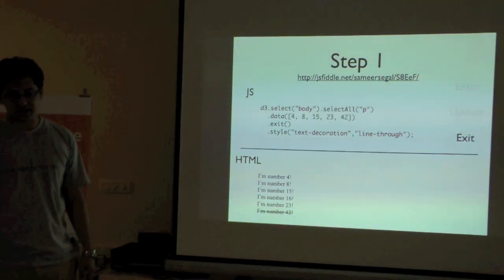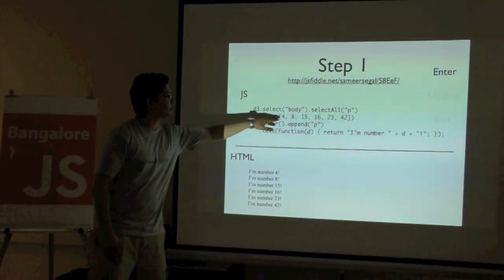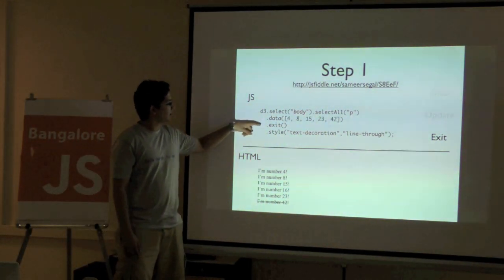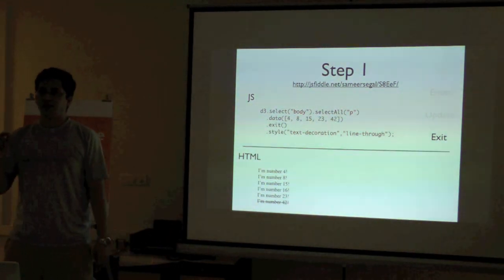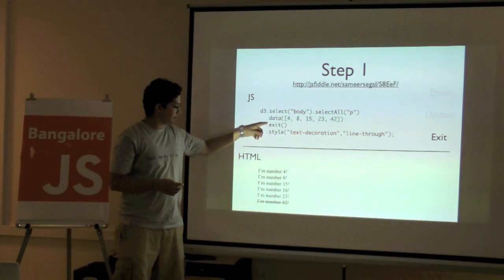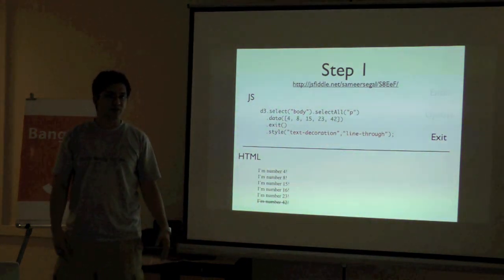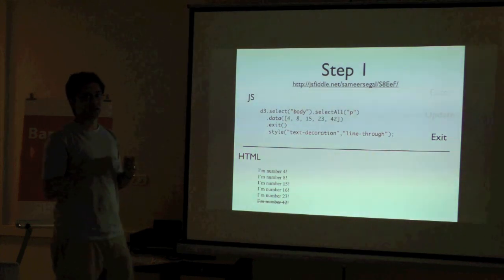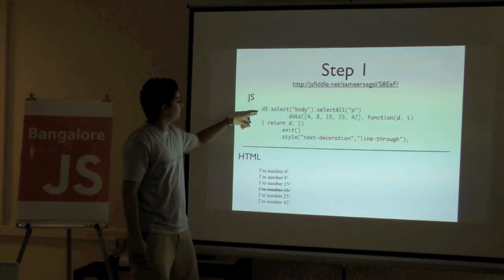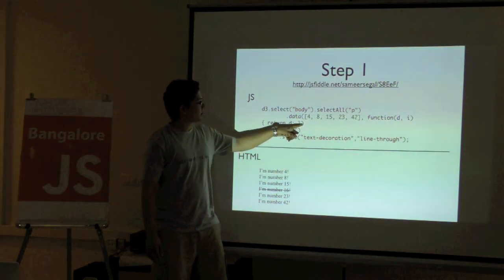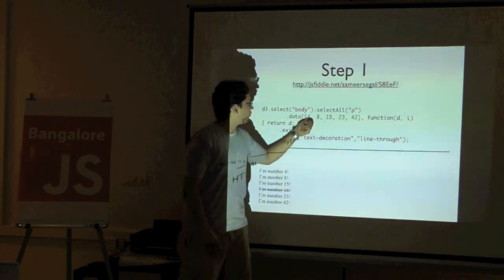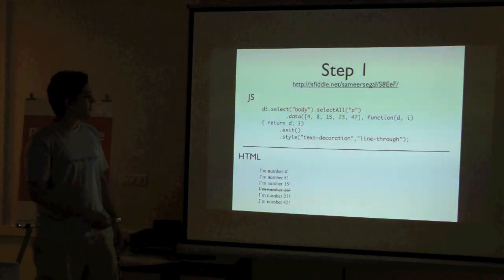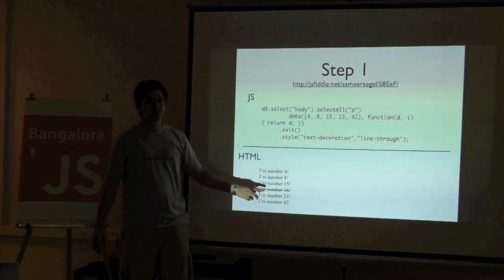Now let's move to the exit stage. I had six data points — 4, 8, 15, 16 — I'll remove 16. On exit, change the style decoration to line-through. But can you see the mistake? I removed 16, but something else got crossed out — 42 — because D3 just assumed the array length is shorter and the last point dropped. We need to tell D3 how to identify a unique data element. So when specifying the data, we pass a function taking d and i — d is the element, i is the index — and we return d. Now it sees 16 is missing and crosses out 16 correctly.